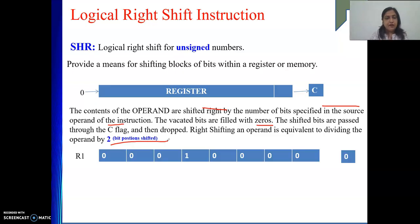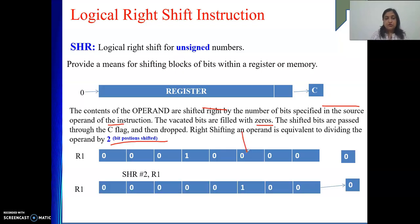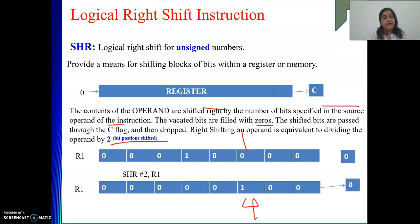This is my R1, again I have taken the same example - it is representing 16. Then I will do right shift, so where my 1 will come? At this position. What is this value represented by R1 content? It is nothing but 4. So 16 divided by 2 to the power 2 will be 4. So we are getting that result here.